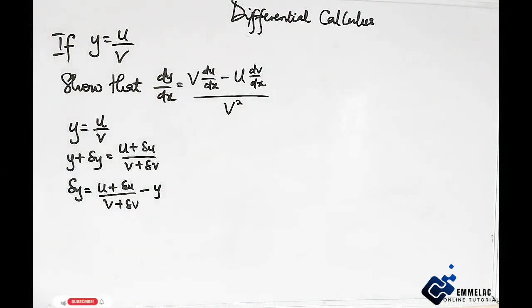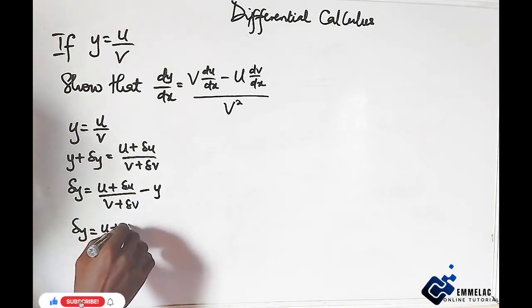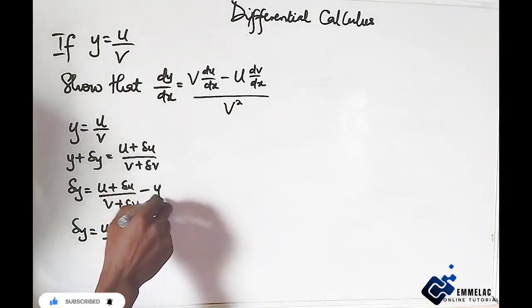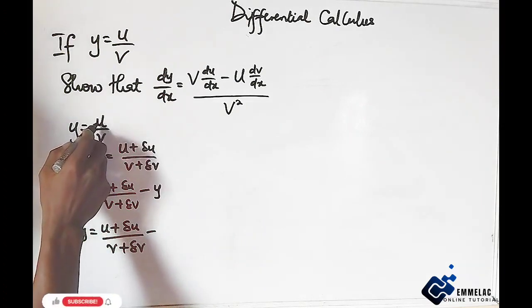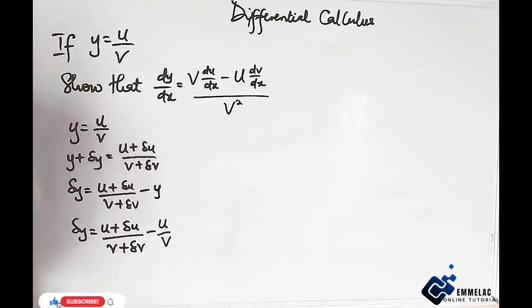At this point, you have change in y equals u plus change in u all over v plus change in v minus, taking that y is u over v, so here you have u over v.